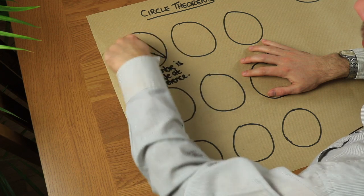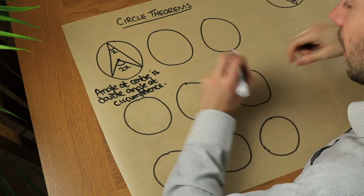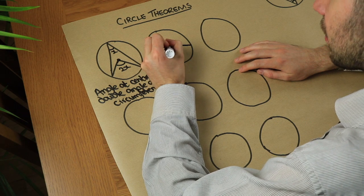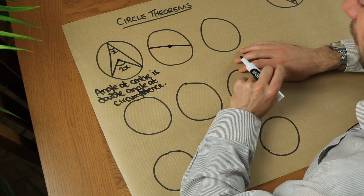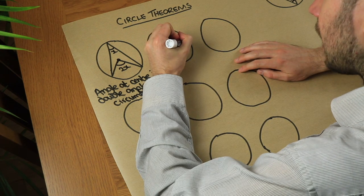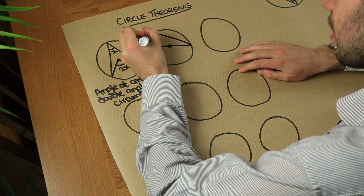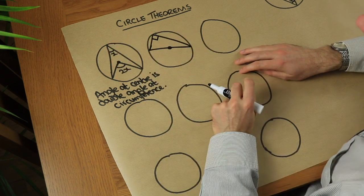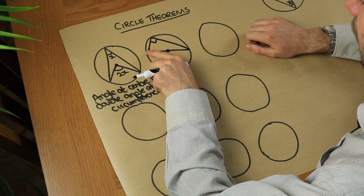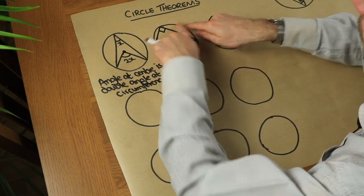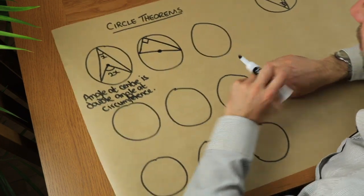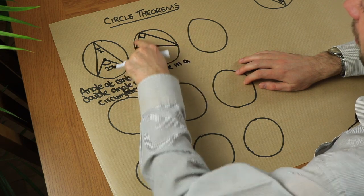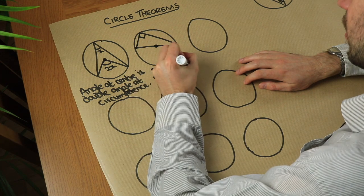A reminder that the circumference of the circle is the edge of the circle. The next circle theorem involves the diameter. If this is the diameter going through the centre of the circle, then any angle in that semicircle at the circumference will always be 90 degrees. So the circle theorem is: the angle in a semicircle is 90 degrees.